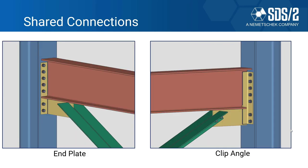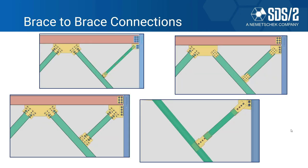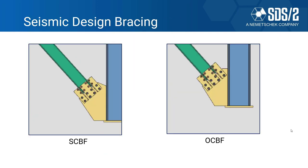We have shared connections — instead of having two different clip angles for the gusset-to-column connection and the beam-to-column connection, you can combine those. Newer to SDS 2, we also provide brace-to-brace connections, which also come with calculations. Finally, for seismic connection design we have offered the SCBF and OCBF — the SCBF will include that hinge zone in the gusset.